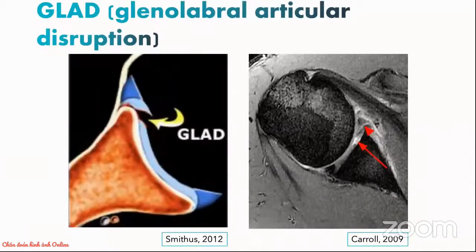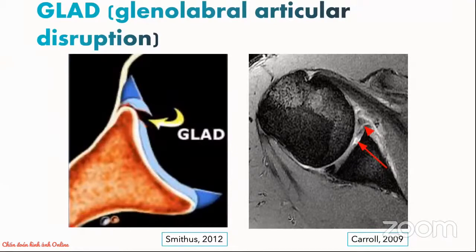Next, the GLAD, or the glenolabral articular disruption. The GLAD lesion combines a labral tear with an adjacent cartilage defect. In the axial MRI image on the right, we can see an anterior labral tear as pointed out by the arrowhead, and just next to it, there is a cartilage defect also annotated by the arrowhead. When the labral tear is minimal or mild, patients will complain of pain from the osteochondral region rather than instability itself.